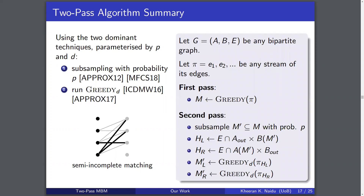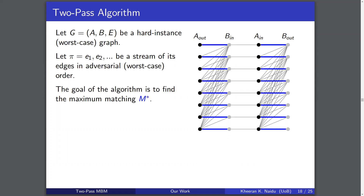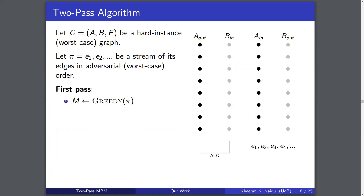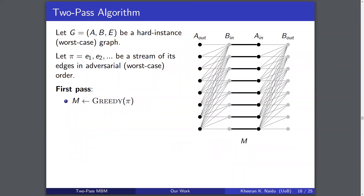We combine these two techniques in the algorithm shown on the right, best explained by giving a hard-instance graph example with edges arriving in adversarial order. The goal is to find the maximum matching m*. In the first pass, we run a simple greedy algorithm to output a maximal matching: when an edge arrives, it's added to memory as long as it doesn't break the matching property; otherwise it's ignored. By the end of the stream, we get a maximal matching, which in this case is exactly a half approximation.